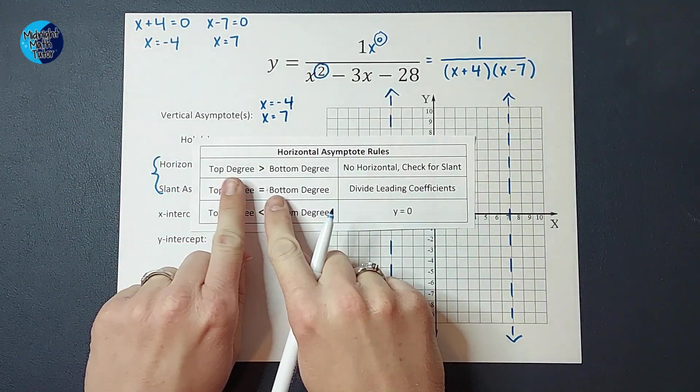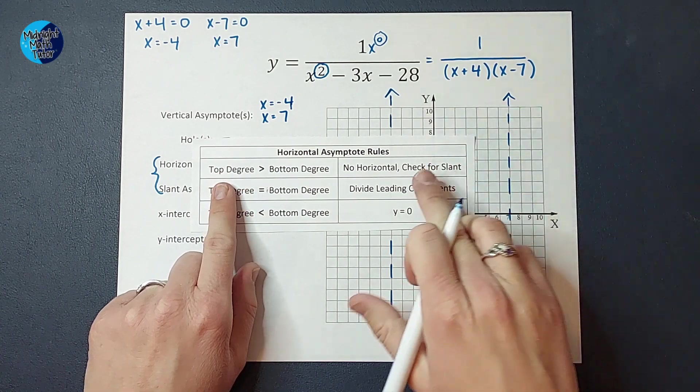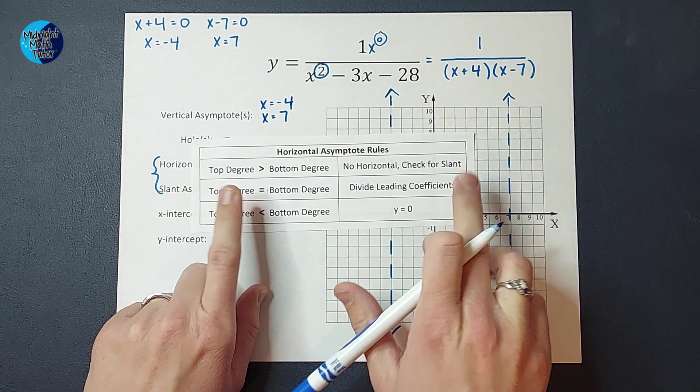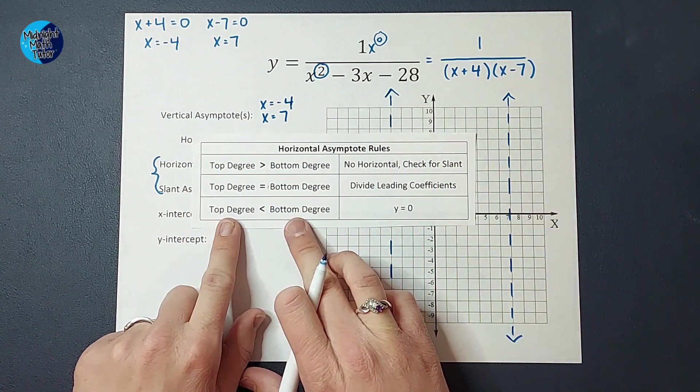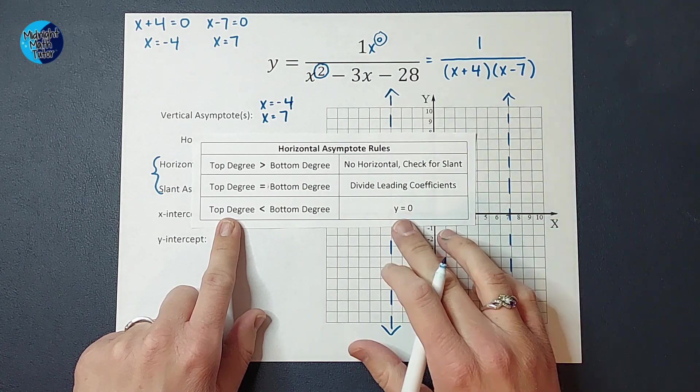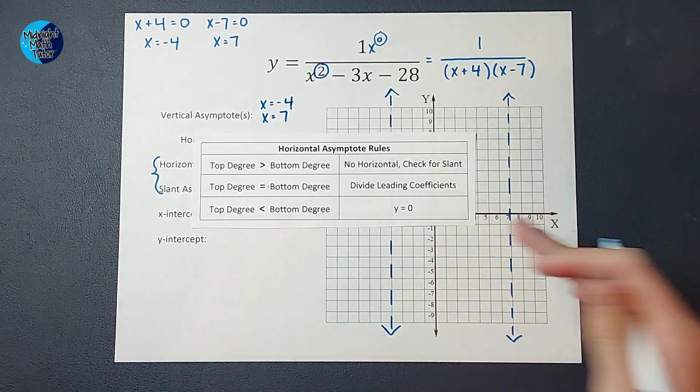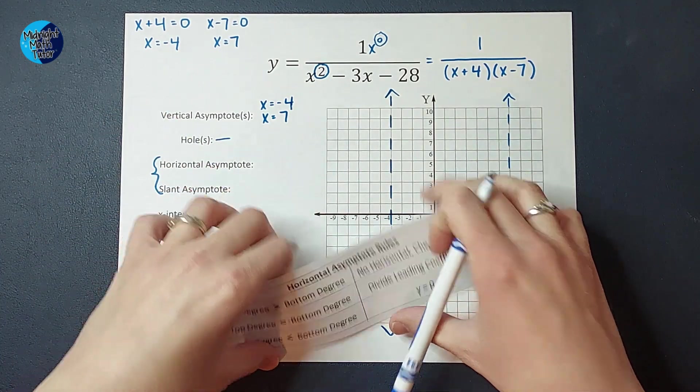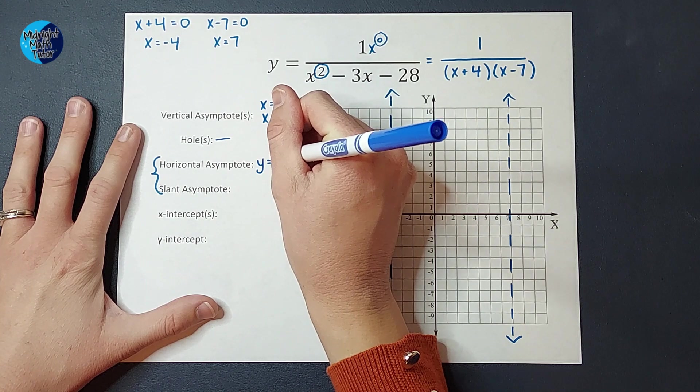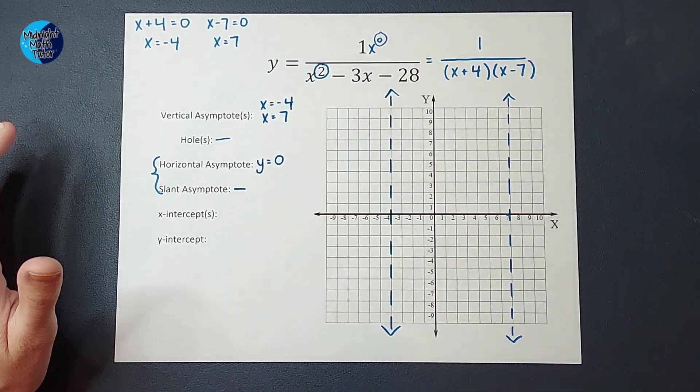So we compare these. If the top degree is greater than the bottom degree, you don't have a horizontal asymptote. You're going to check for a slant. If they're equal, you divide leading coefficients. If the top is less than the bottom, which is ours, right? 0 is less than 2. Then your horizontal asymptote is y equals 0. So that is ours. Our horizontal asymptote is y equals 0. And we do not have a slant asymptote in this example.